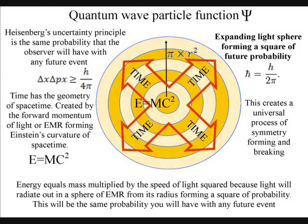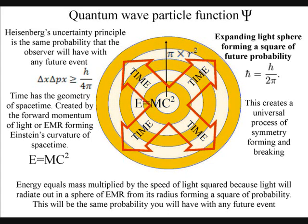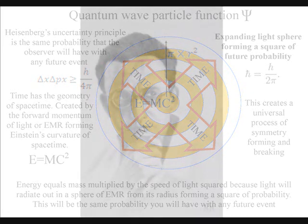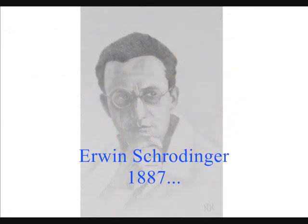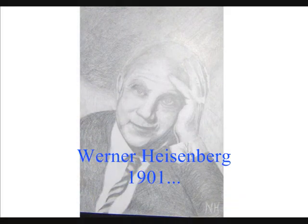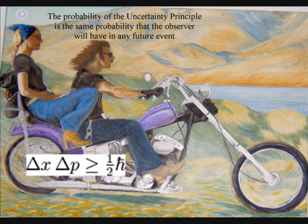This theory is based on two simple postulates. The first is that the quantum wave particle function, explained by Schrödinger's wave equation, represents the forward passage of time or arrow of time itself, photon by photon, or moment by moment. The second postulate is that Heisenberg's uncertainty principle, that is formed by the wave function, is the same uncertainty that we have with any future event.